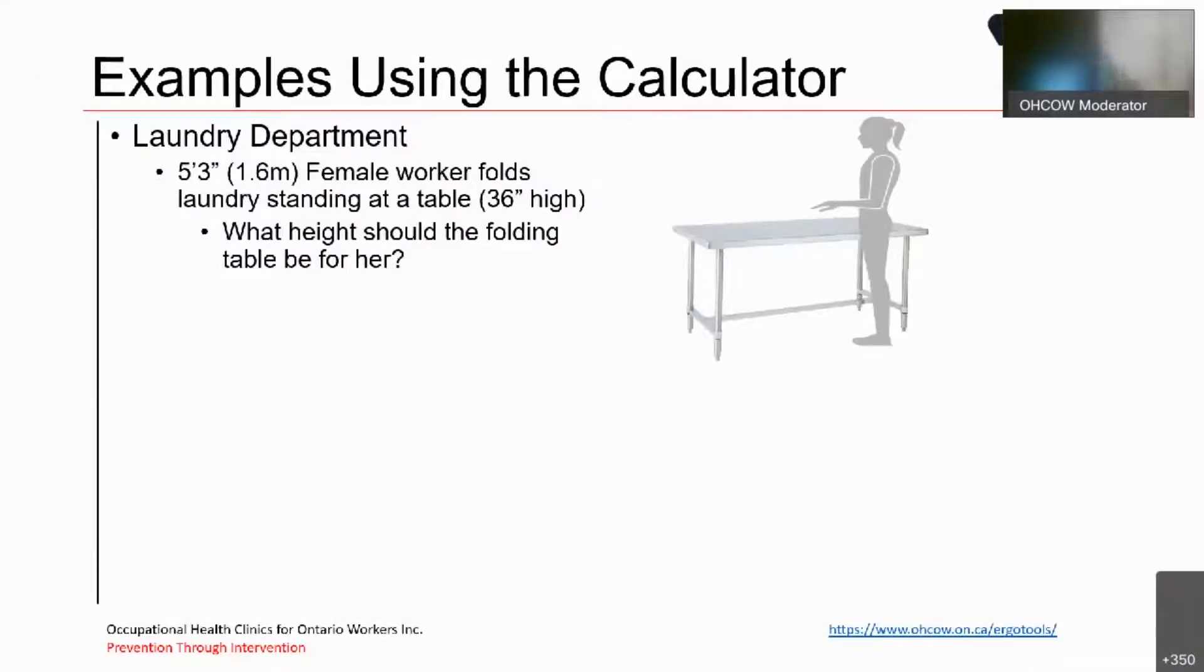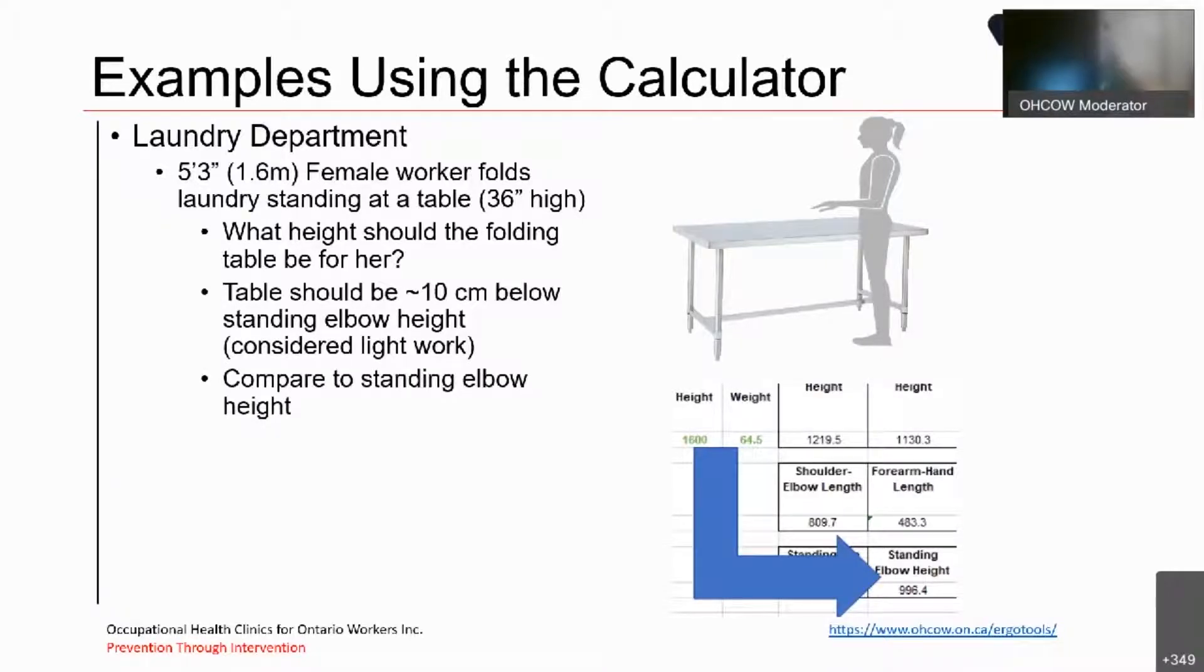So let's try a couple of examples using the calculator. Let's say we have a five foot tall female worker who folds laundry at a table that is 36 inches high. What height should the folding table be for her? Well, the table itself, given research, is that light work should be approximately 10 centimeters below standing elbow height. So standing elbow height for this individual is 99.6 centimeters. This means that by taking 10 centimeters off, the ideal height for her should be 89.6 centimeters or 35.3 inches. The table itself, standard table height is 1.8 centimeters or 0.7 inches too high for her when we actually compared the data.